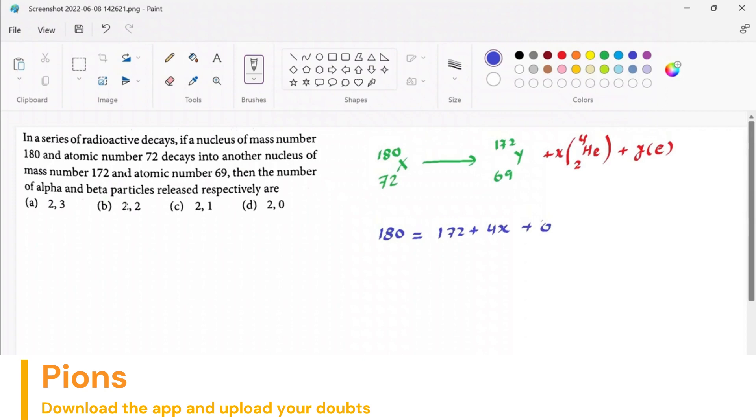So this is your equation one. Let's see the charges. It's 72 here, the atomic number, and here it will be 69 plus 2x, and here the charge is contributed by an electron, so y.